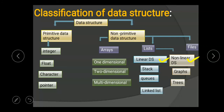In linear data structures there are stacks, queues, and linked lists. In non-linear data structures we have graphs and trees. This is the classification of data structures.